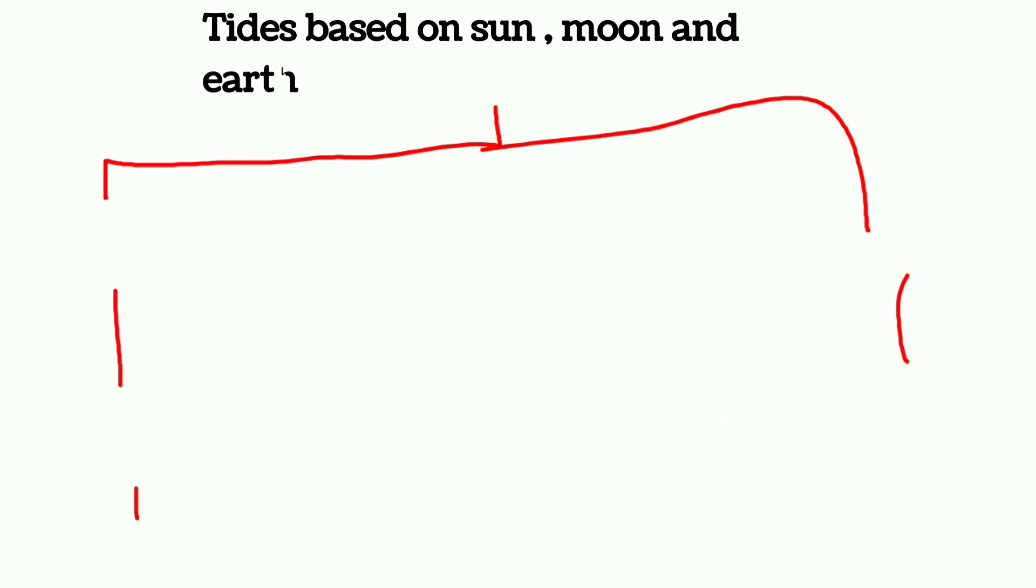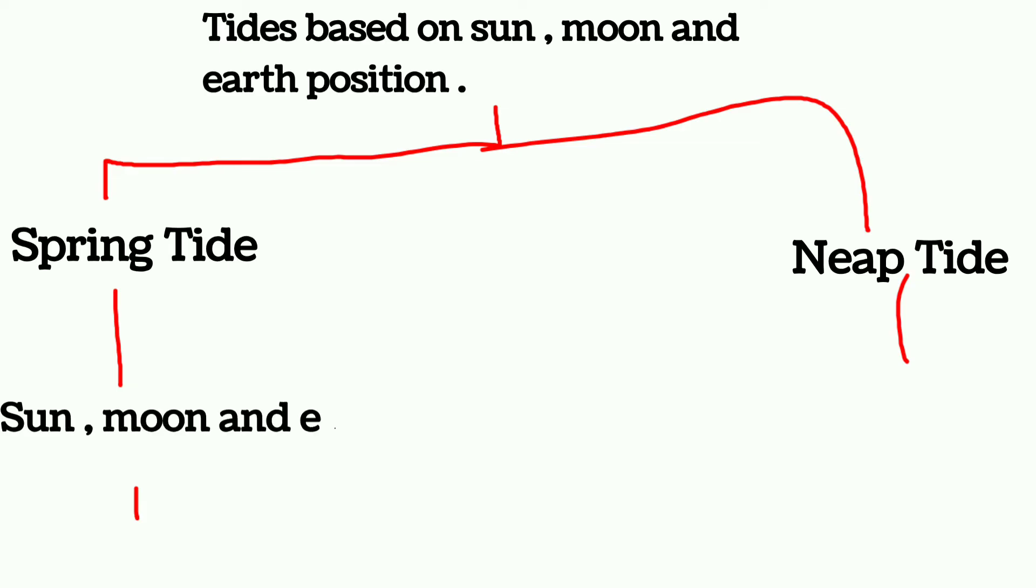Now I'll discuss about the tides based on the sun, moon, and earth's position. First is spring tide and second is the neap tide. Sun, moon, and earth are in straight line in spring tide and height will be higher. It occurs twice a month.